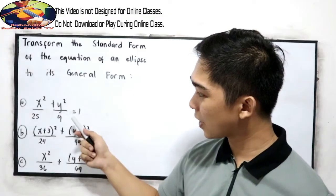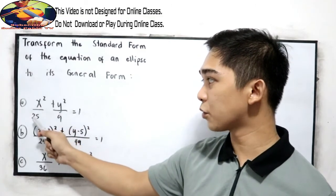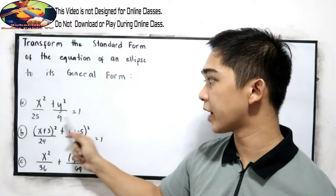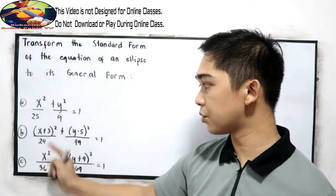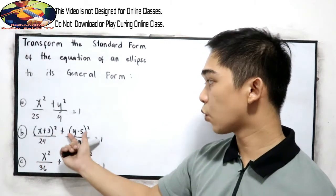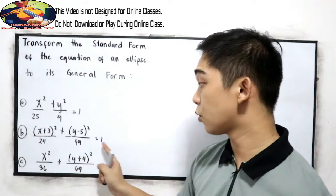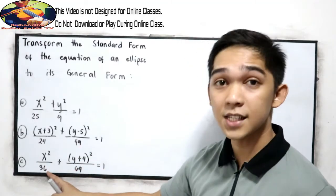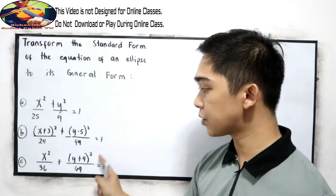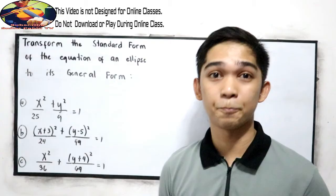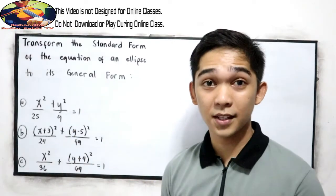We have letter A, B, and C. For letter A, x squared over 25 plus y squared over 9 is equal to 1. Letter B, quantity x plus 3 raised to 2 over 24 plus quantity y minus 5 raised to 2 over 49 is equal to 1. And for letter C, x squared over 36 plus quantity y plus 4 raised to 2 over 64 is equal to 1. I will answer A and B, then your assignment is letter C.